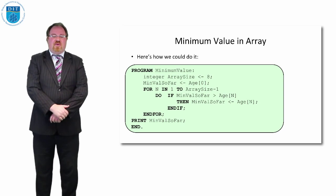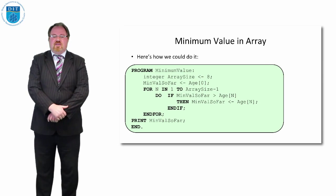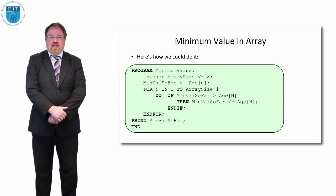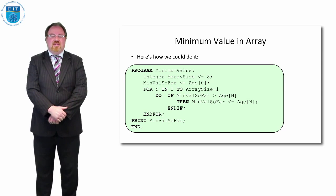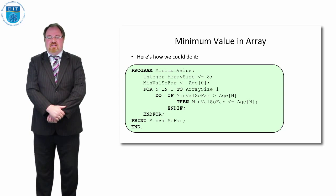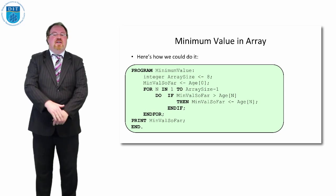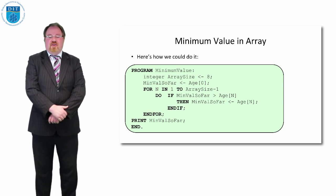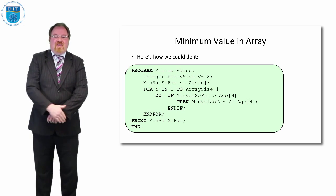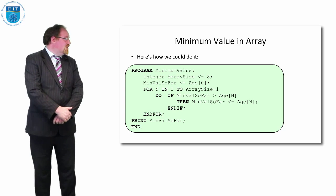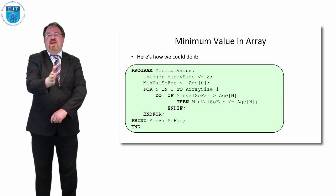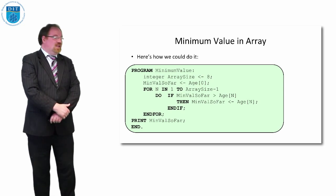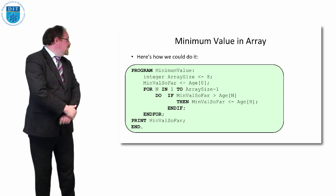It's a relatively straightforward program. We have a for loop that goes from the start to the end of the array. We create a variable called 'minimum so far' and assume the first element is the minimum value. Then we go through the rest of the array and check if there's any value smaller than that. If we find a smaller value, that becomes the minimum so far. We keep going, and if we find anything smaller than that, it becomes the new smallest value. Then we print that out.